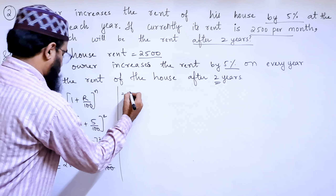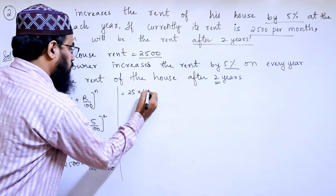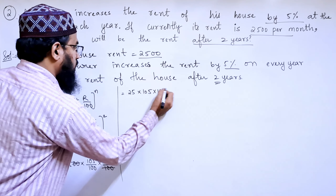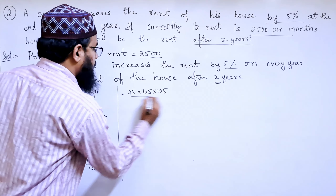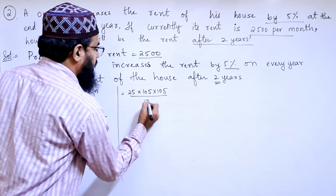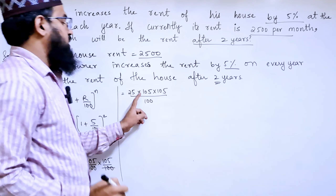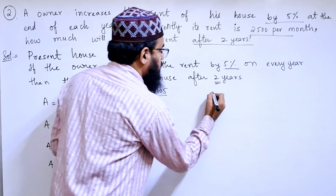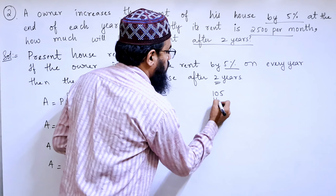So A equals 2,500 into 105 by 100. Two zeros and two zeros cancel, so we can simplify. Next we can write 25 into 105 by 100, and then 105 into 105 by 100.